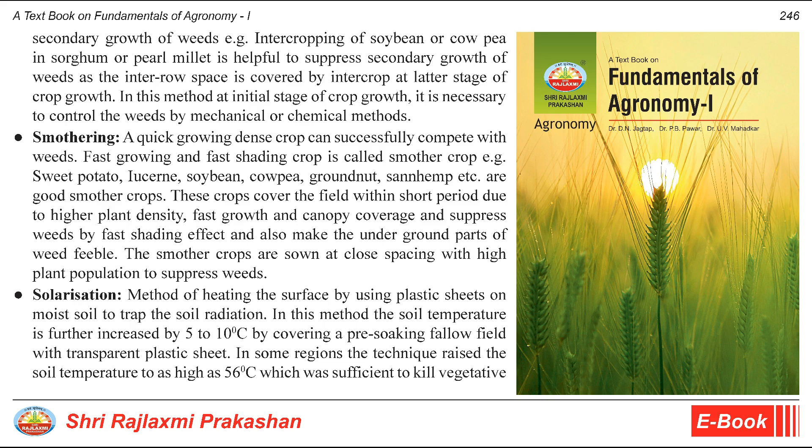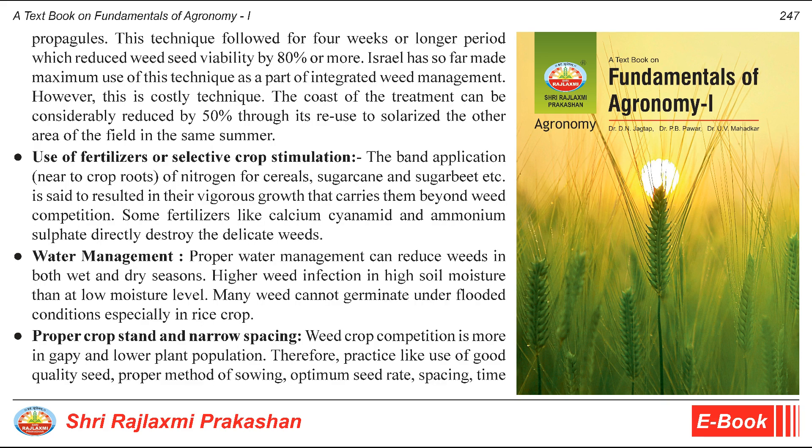Solarization: a method of heating the surface by using plastic sheets on moist soil to trap soil radiation. In this method, the soil temperature is further increased by 5 to 10 degrees Celsius by covering a pre-soaked fallow field with a transparent plastic sheet. In some regions, the technique raised the soil temperature to as high as 56 degrees Celsius, which was sufficient to kill vegetative propagules. This technique, followed for 4 weeks or longer, reduced weed seed viability by 80% or more. Israel has made maximum use of this technique as part of integrated weed management. However, it is a costly technique; the cost can be reduced by 50% through reuse.